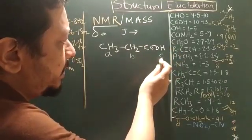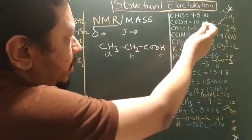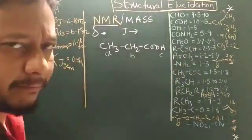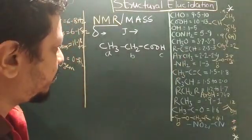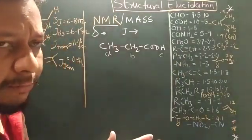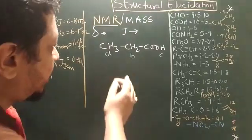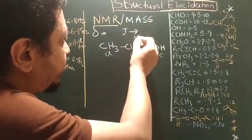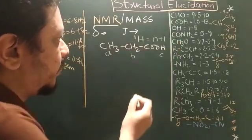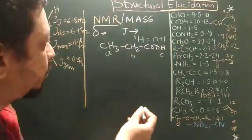This becomes very highly deshielded around 10 to 13 ppm. Like that you can get the peak values. You must understand each peak is going to be split by the influence of the neighboring nucleus. Now, the splitting of each peak can be calculated with the help of N plus 1 rule, where N is the number of neighboring protons.